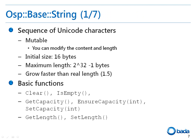Let's take a look at the string type in more detail. Basically, in Bada, a string is a sequence of Unicode characters. The content and the length of the sequence can be changed. So if a string is created without specifications, 16 bytes are allocated by default. After that, if the string length is changed, as much as 1.5 times the actually required memory is allocated. The maximum length of a string is 2 to the 32nd power minus 1 bytes.